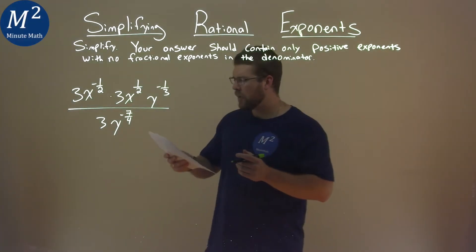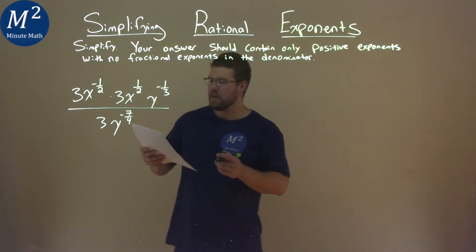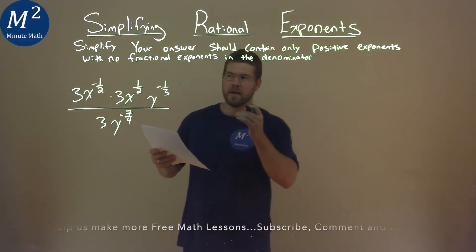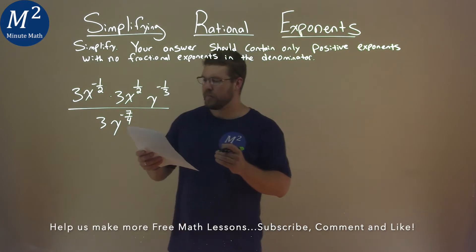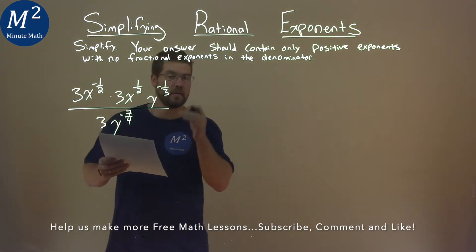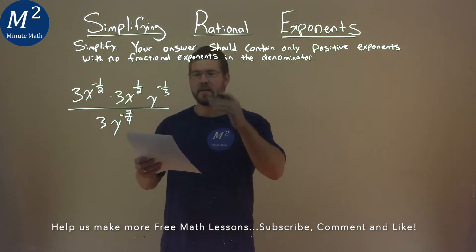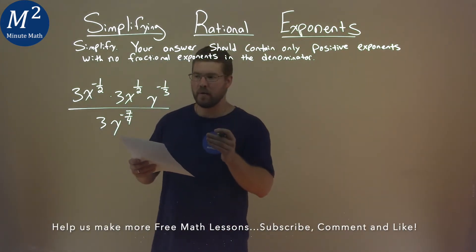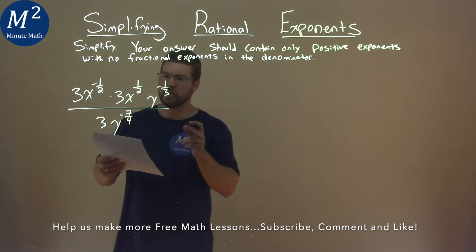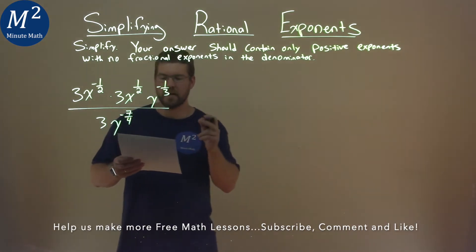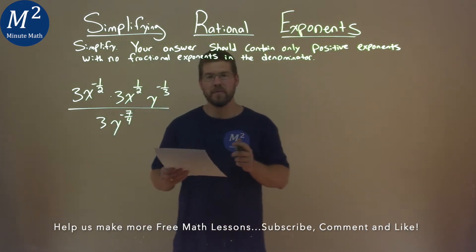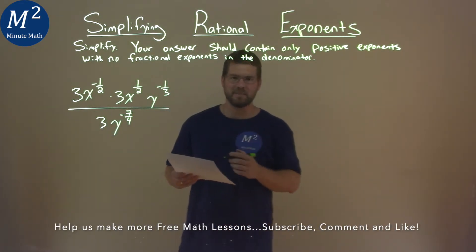We're given this problem right here: 3x to the negative one-half power, times 3x to the one-half power, times y to the negative one-third power, all over 3y to the negative seven-fourths power, and we've got to simplify.